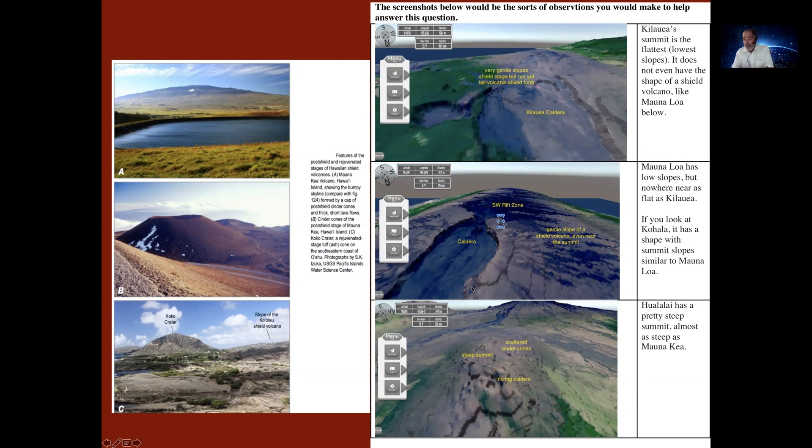The images on the right would be different locations, the sorts of observations that would help answer this question. Kilauea, if you pull back from the Avatar, has very gentle slopes, very active lava flows, and it's the beginning of a shield volcano.